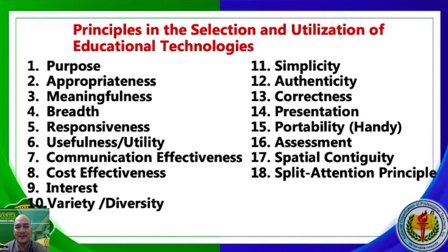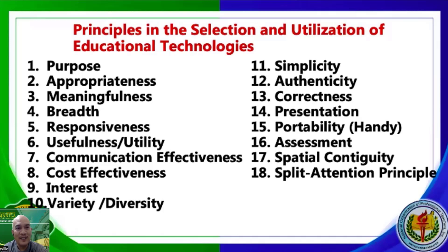Sixteen is Assessment — there should always be assessment. You need to evaluate the use of the technology to determine if further revisions or improvements are needed. Seventeen is Spatial Contiguity — pictures and words must be presented near rather than far from each other. How you arrange your presentation matters.